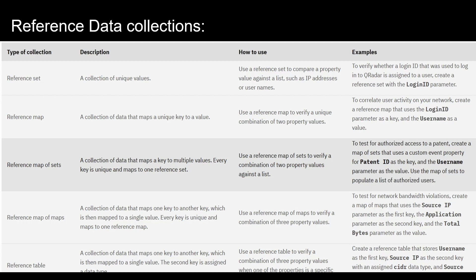IBM QRadar has different types of reference data collections that can handle different levels of data complexity. The most common types are reference sets and reference maps, which we are going to see in depth in a few minutes. A reference set is a collection of unique values. Suppose you use a reference set to compare a property against a list of values — for example, multiple source IPs where source IP is the property and the various IP values are the elements in your reference set.